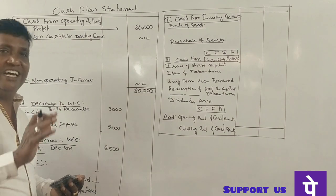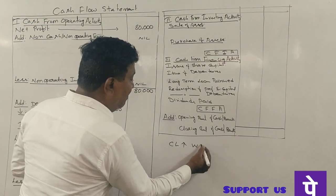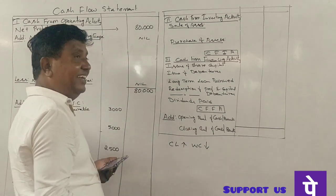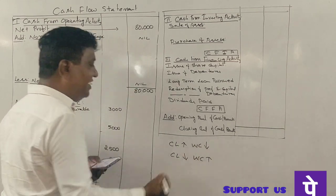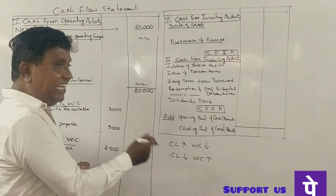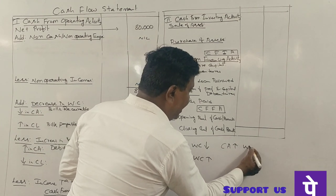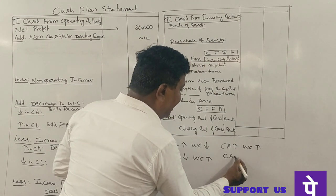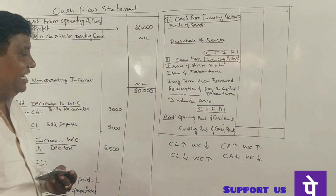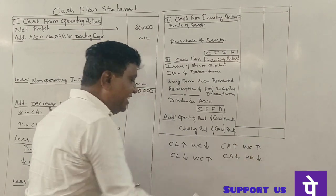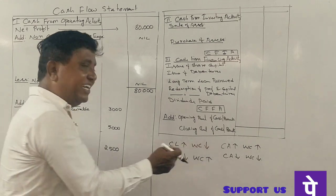Let's revise the working capital rules. When current liability increases, working capital will decrease. When current liability decreases, working capital will increase. When current asset increases, working capital will increase; when current asset decreases, working capital will decrease. For current liabilities, it's the reverse: increase means working capital decreases, decrease means working capital increases.